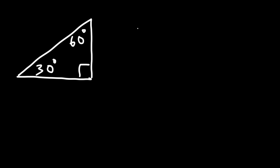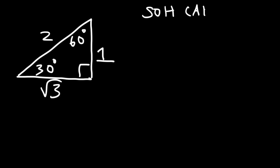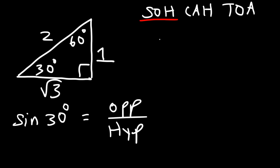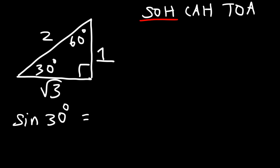Across the 30-degree angle the side length is 1, across the 90-degree angle it's 2, and across the 60-degree angle it's the square root of 3. You need to be familiar with SOH-CAH-TOA. Sine equals opposite over hypotenuse. Focusing on the 30-degree angle: opposite is 1 and the hypotenuse is 2, so sine 30 is 1 over 2.